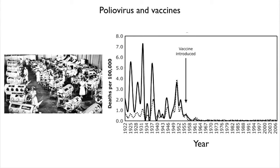We have a somewhat similar situation with poliovirus, although we're not quite done with polio. In the 1950s, a vaccine was developed and introduced, and deaths from poliovirus decreased to almost zero. These days, only a few people in the world get poliovirus every year, and we're in the last stages of trying to mop up this virus. Because some infections occur in war zones, it's been quite difficult to put an end to this virus entirely.